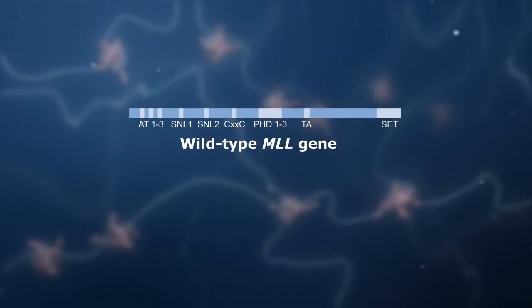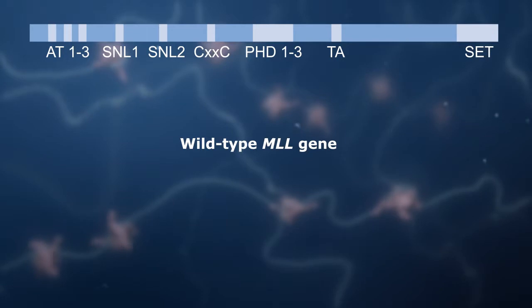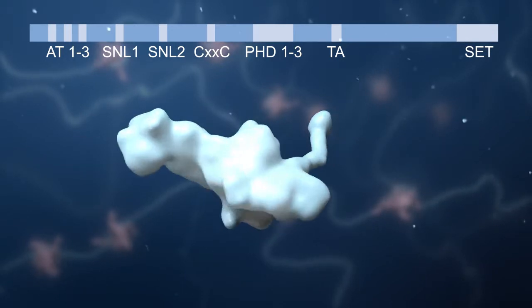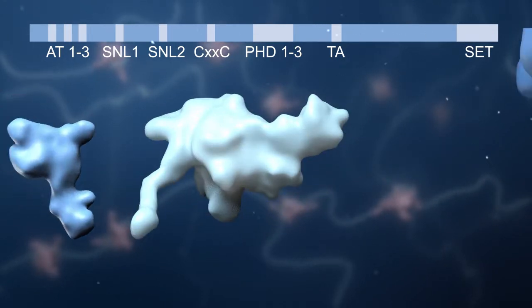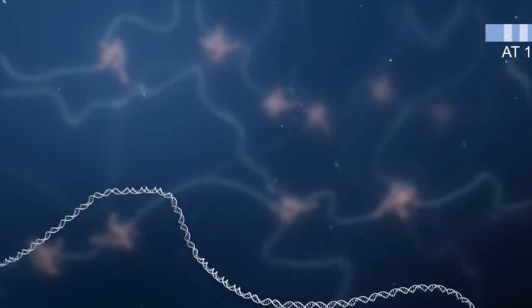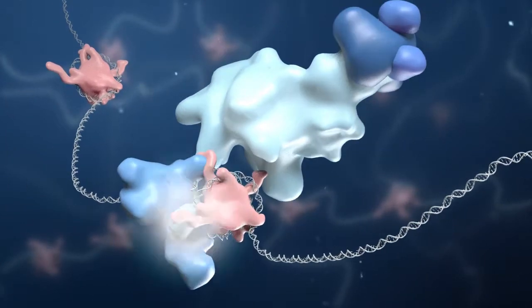The natural or wild type MLL gene encodes an epigenetic regulator, histone methyltransferase, belonging to the compass protein family that catalyzes methylation of lysine 4 of histone 3.